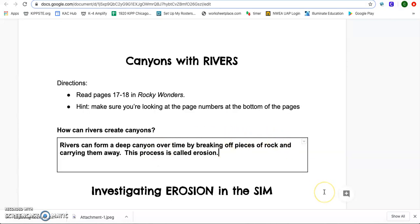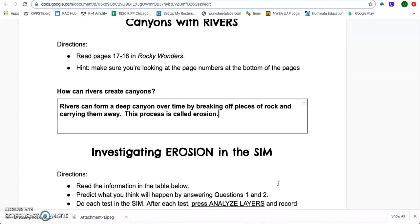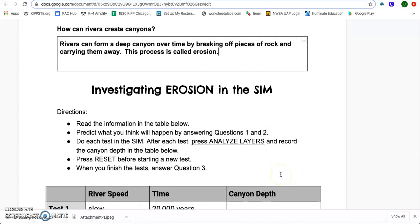And there we have our answer for our question. How can rivers create canyons? We know that the water is going to actually create that sediment to break off the pieces of that rock layer.